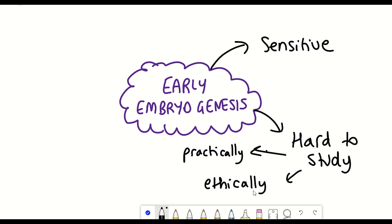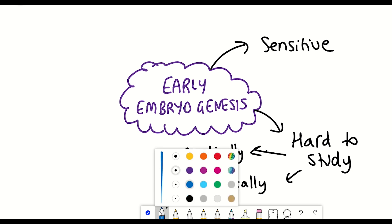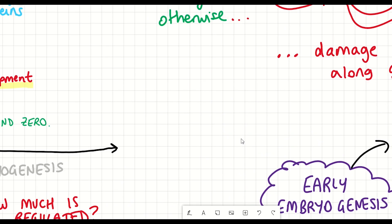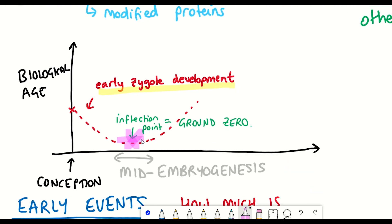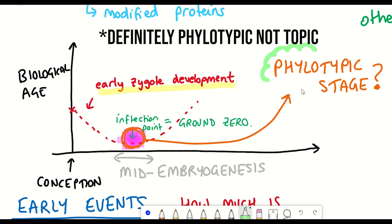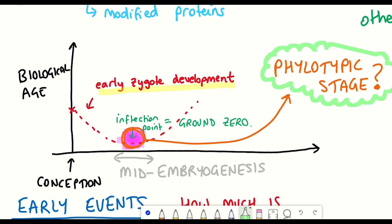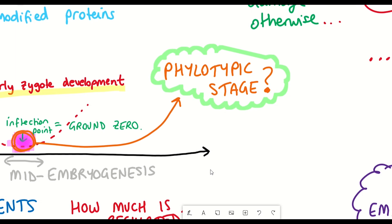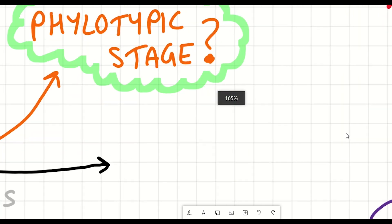Moreover, especially with human embryos, in the lab they can only be studied up to 14 days post-conception. However, one interesting point made in this article is that this ground zero state during mid-embryogenesis may correspond with the so-called phylotypic stage — defined as the time point in the development of an animal when it most closely resembles other species.